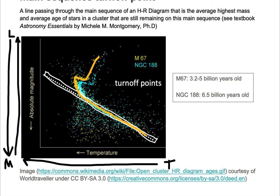Let's take a look at the NGC 188 cluster. Along the same HR diagram main sequence, we see several blue stars and then we see them start to bend off, or evolve off, and start to die.